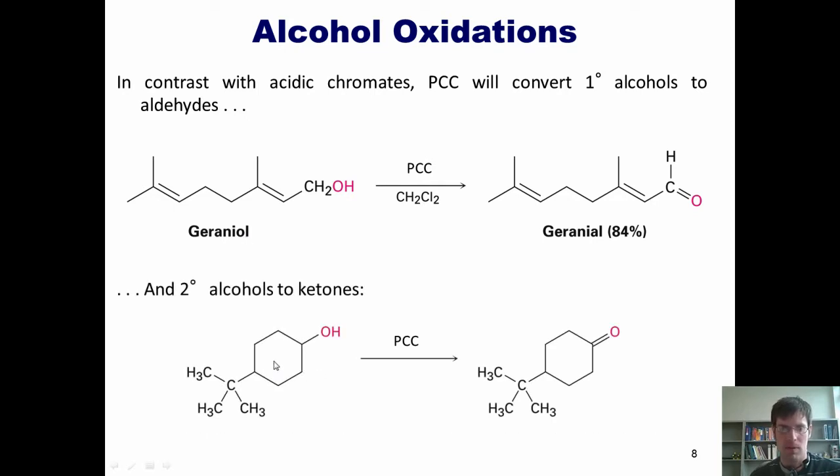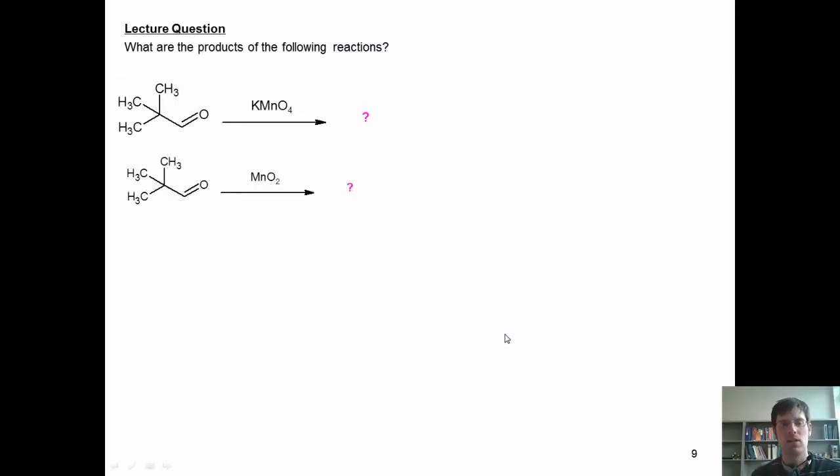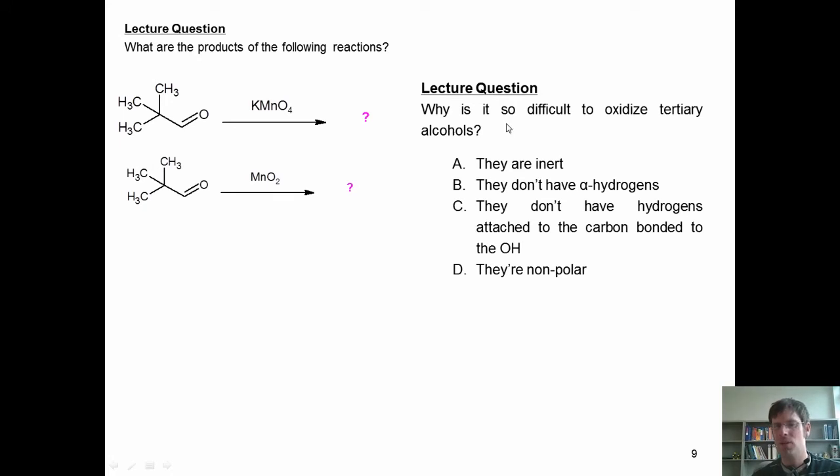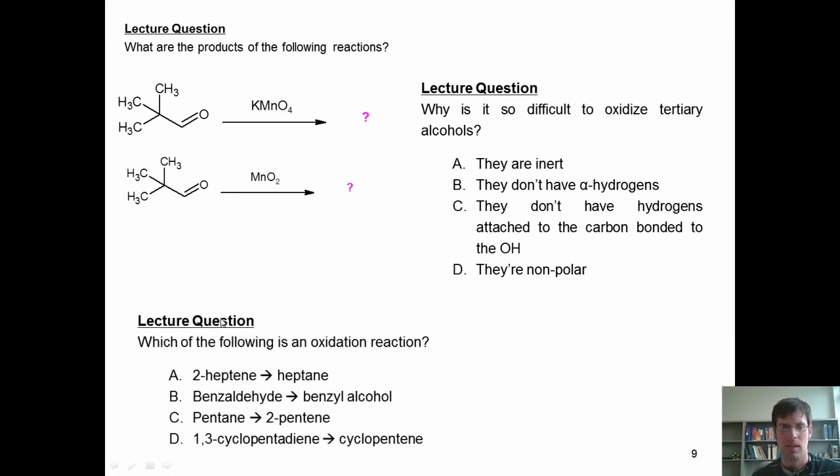Similarly to the chromium reagents, if I have a secondary alcohol and treat it with PCC, it will also go up one bond to a ketone and then stop. Here's a list of standardized type exam questions that I want you to be able to answer. What are the products of the following reactions? Why is it so difficult to oxidize tertiary alcohols? And which of the following is an oxidation reaction?